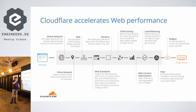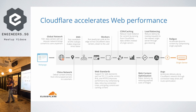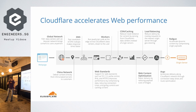Then we have load balancing, where you can configure different origins for your web servers. We constantly test the latency of your origin so we can send requests to whichever origin is responding fastest. After that, we have Argo, which accelerates the connection by finding the fastest route to the origin. Finally, we have Railgun, which accelerates content by compressing origin payloads. With all this stack, that's how we optimize the delivery of content.